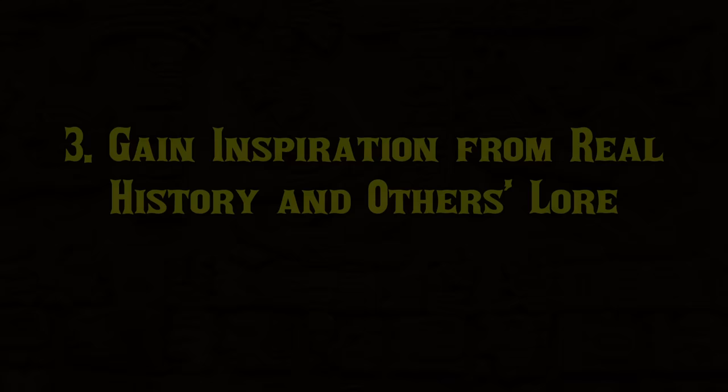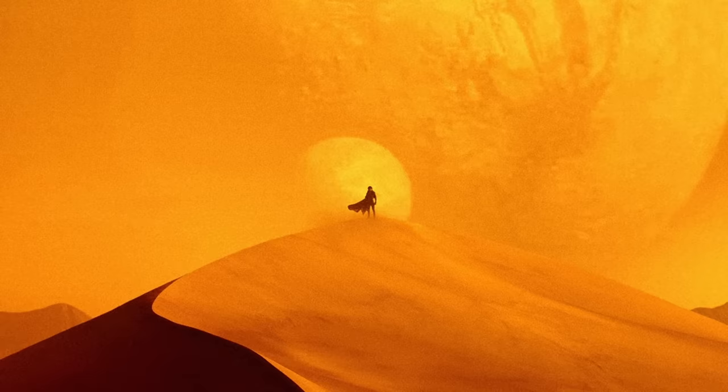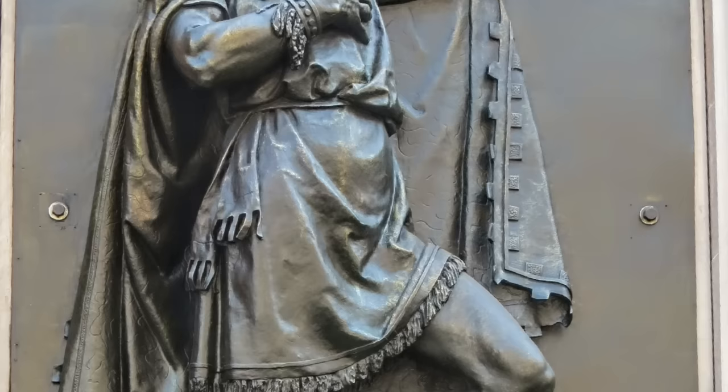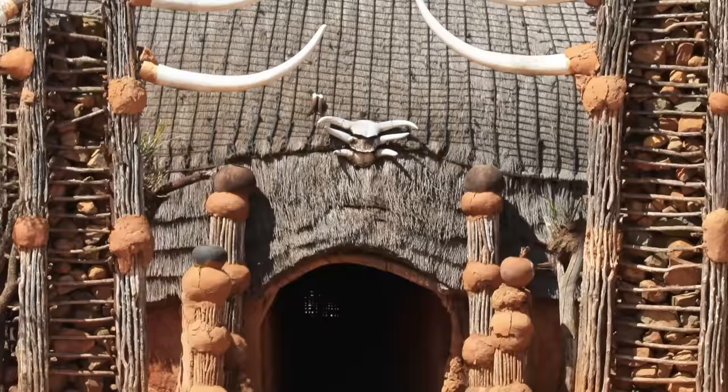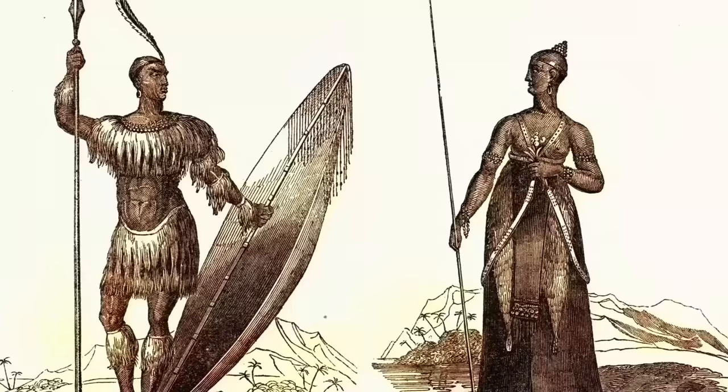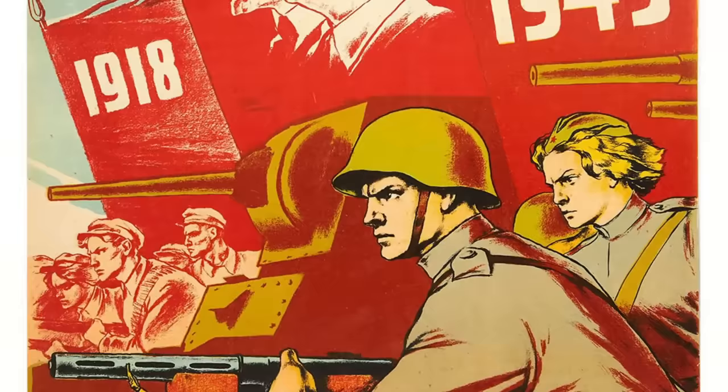Number three: gain inspiration from real history and other people's lore. A really big part of having a creative story to tell is just having good influences and knowledge of history to draw upon. I watch a lot of YouTube history videos. If I want a poet king with an epic backstory who does religious reforms, I can draw on the story of King Nezahualcoyotl. If I need a leader who created social-military reforms and formed an empire by breaking from traditions of ritual warfare, I can draw on Shaka Zulu. Knowing different, interesting moments in history gives me more influences to reflect on how I can make interesting moments in my own stories.